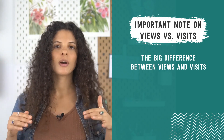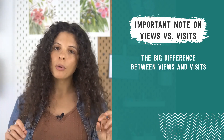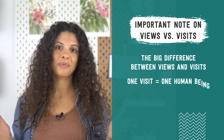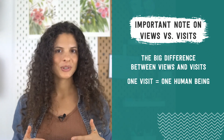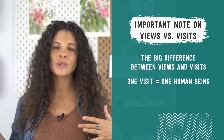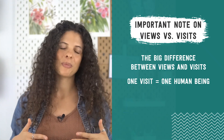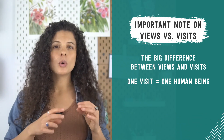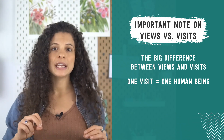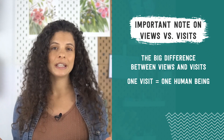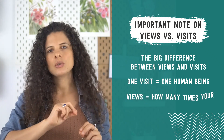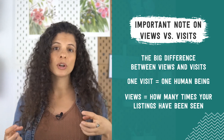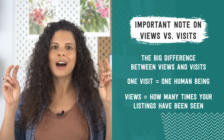They are both important — they just tell you different things. Put simply, a visit means a person, one human being that came to your shop. So if you have 250 visits, you know that 250 different people visited your shop over that time period. Views are different. The number of views is more an indicator of whether those visitors stayed in your shop and wanted to click on more listings, not just the one they initially came to see — so it tells you how many times your listings have been seen. Your views can tell you which of your products attract more eyes.